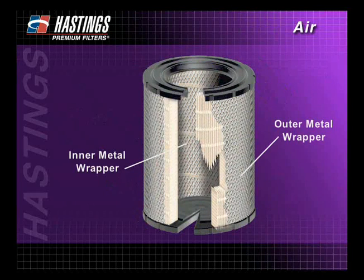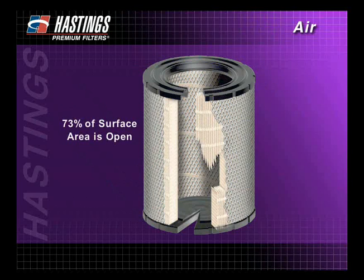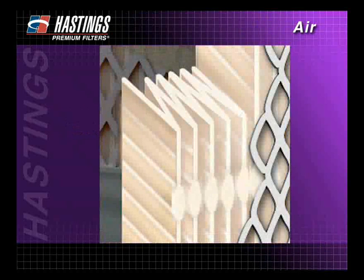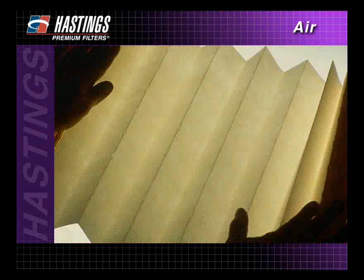The inner and outer metal wrappers protect the filter media and provide structural strength for the completed filter. At least 73 percent of the surface area of all Hastings metal wrappers are open, allowing minimal air flow restriction. The paper media is the most important part of the air filter. Aside from selecting the proper media for each application, Hastings ensures maximum strength and minimum restriction on its heavy-duty filters through its perma-pleat design.